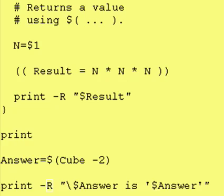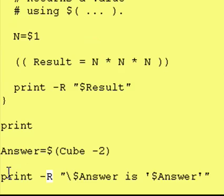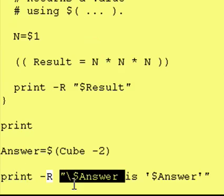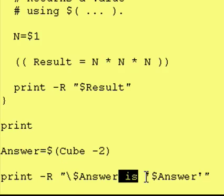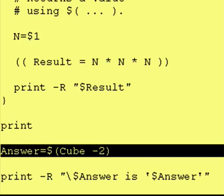So let's run this and dollar sign answer is minus eight. Let's look at the code one more time. So it says here print dollar sign answer is and whatever it was in dollar sign answer, which in our case was a negative eight.